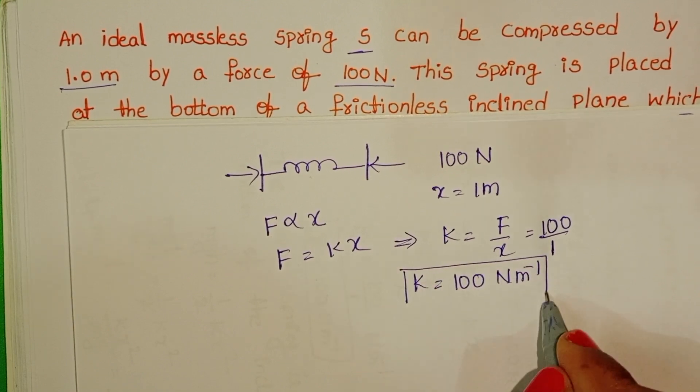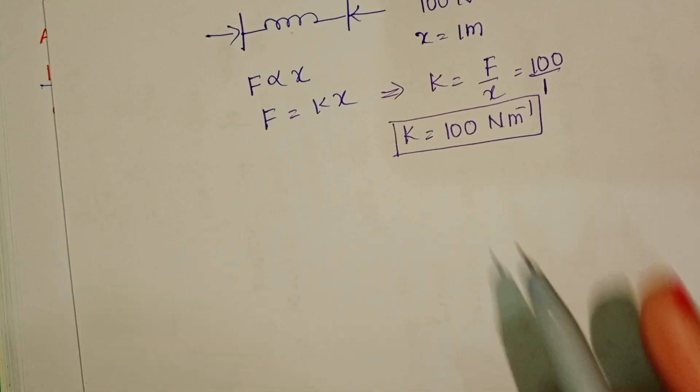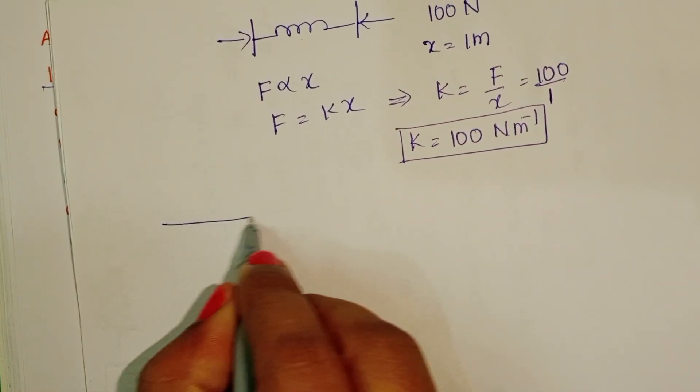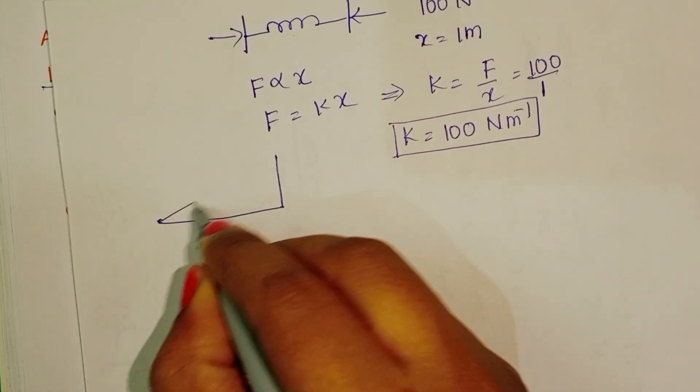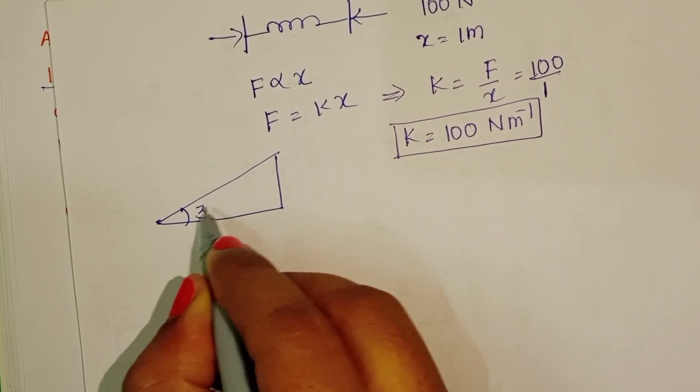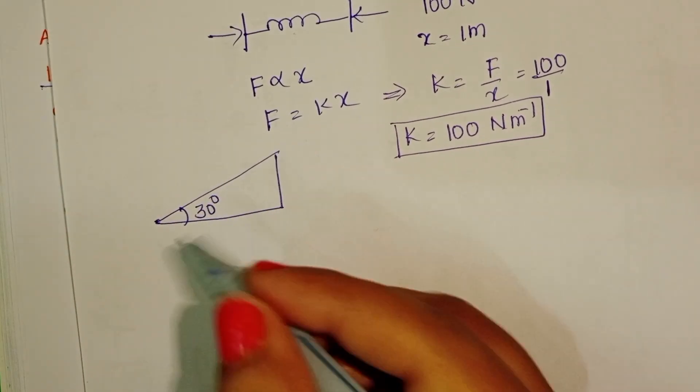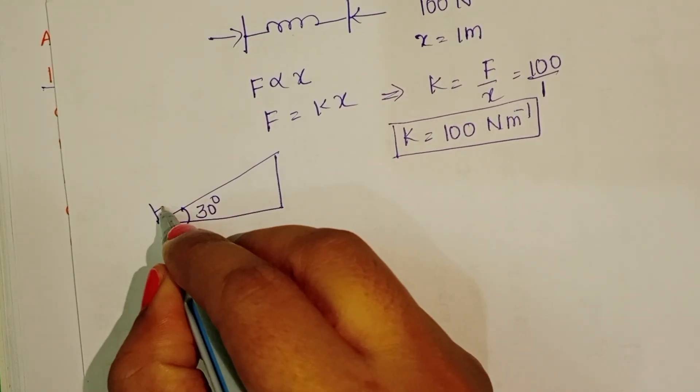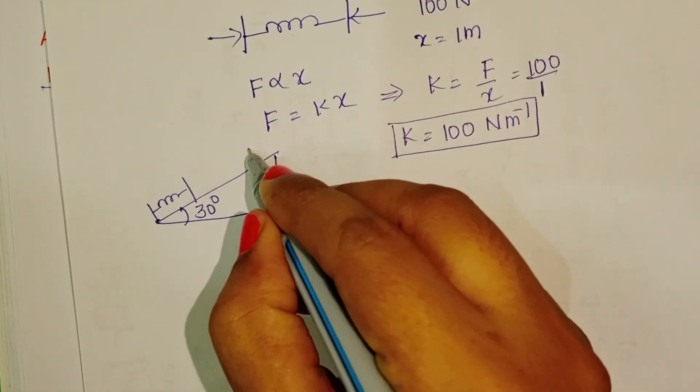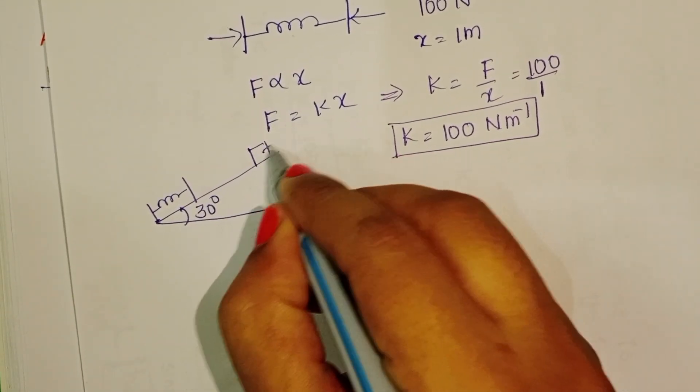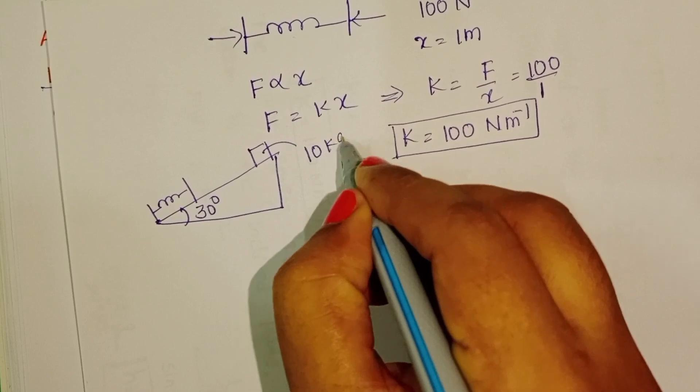We know the spring constant now. The same spring is placed on the inclined plane making an angle of 30 degrees. This is the position of the spring. And take a block of mass 10 kg.